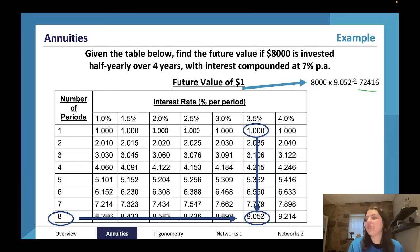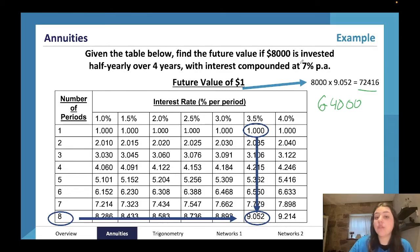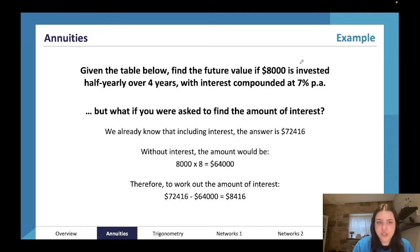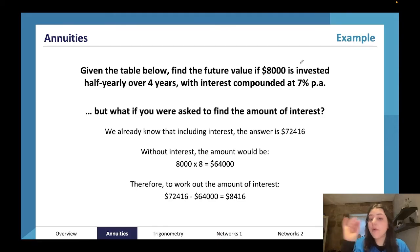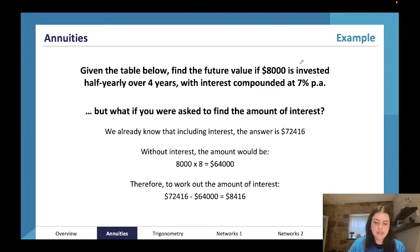You've put eight thousand dollars in eight times, so 8,000 × 8 = $64,000 was your own money. The bank paid you about eight thousand four hundred and sixteen dollars in interest — a pretty good deal for four years. To find the interest earned: total value $72,416 minus contributions $64,000 equals $8,416 in interest.